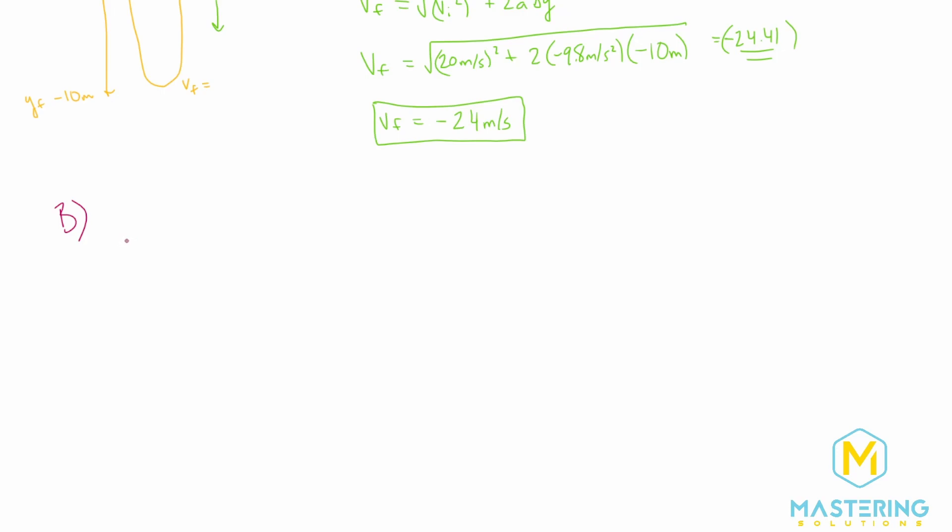One way is you could use y final is equal to y initial plus v i t plus one half a t squared. And then what you're going to have to do is you're going to have to use a quadratic formula to solve for t, which is a pain in the butt, right? We have our calculator, so it's not as bad, but there's a much simpler way. So let me show you.